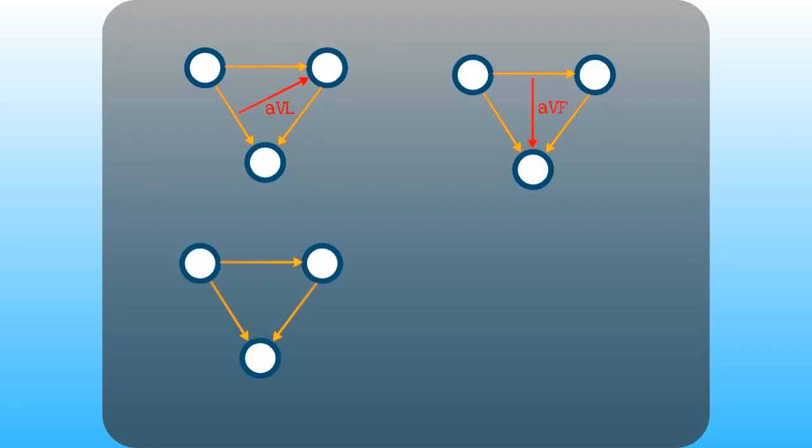For lead AVF, we're going to look down to the floor. So L, of course, is for left. F is for floor, so this is looking straight down. AVF is taking the average starting position for the negative electrode between the right shoulder and left shoulder, and it's looking directly down to the foot. AVF, so it's going at approximately 90 degrees, straight down to the floor.